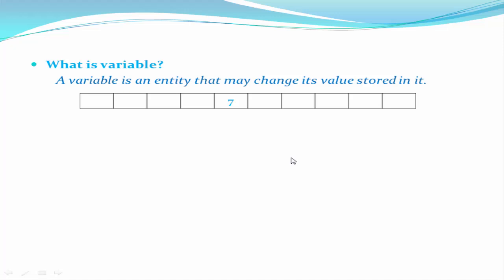A variable is an entity that may change its value. To get a clear idea, let's see an example. In any program, we do lots of calculations and the result is stored in computer memory. Suppose this is a computer memory and the number 7 is stored in some location. A problem arises when we want to retrieve that value — how do we identify this location?